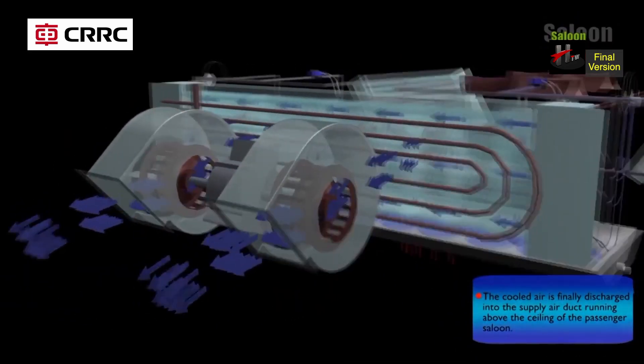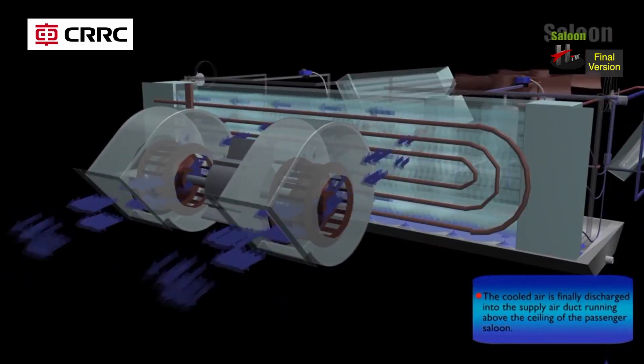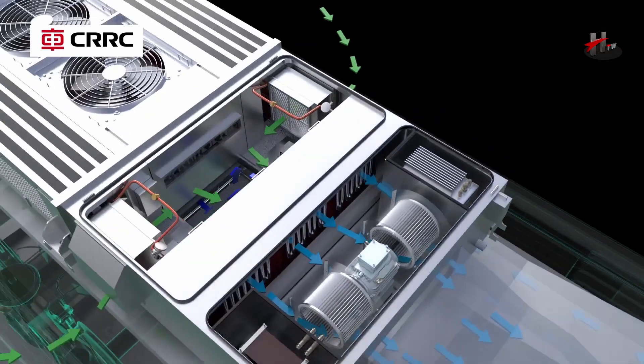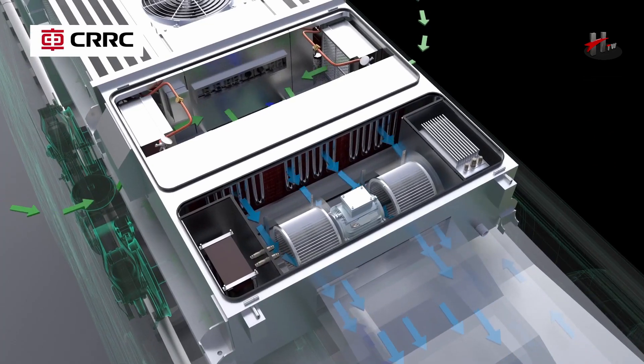The cooled air is finally discharged into the supply air duct running above the ceiling of the passenger saloon.